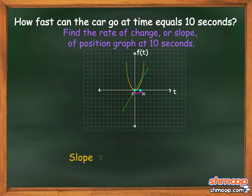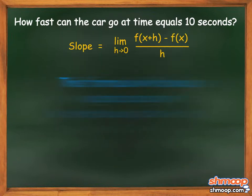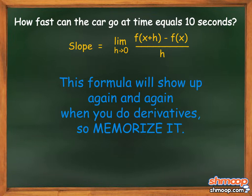Our formula for slope now becomes the limit as h approaches zero of [f(x+h) - f(x)] over [(x+h) - x]. The x's on the bottom cancel out, which leaves us with the limit as h approaches zero of [f(x+h) - f(x)] all over h. Look familiar? This formula will show up again and again when you do derivatives, so memorize it.